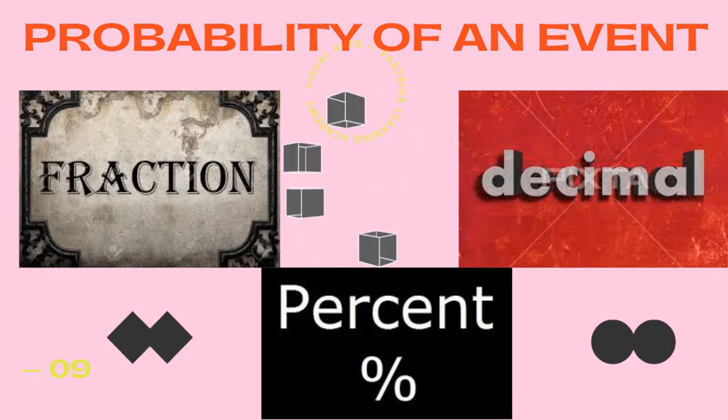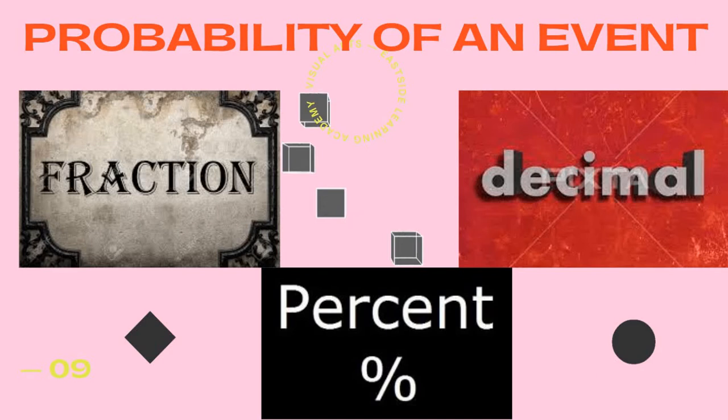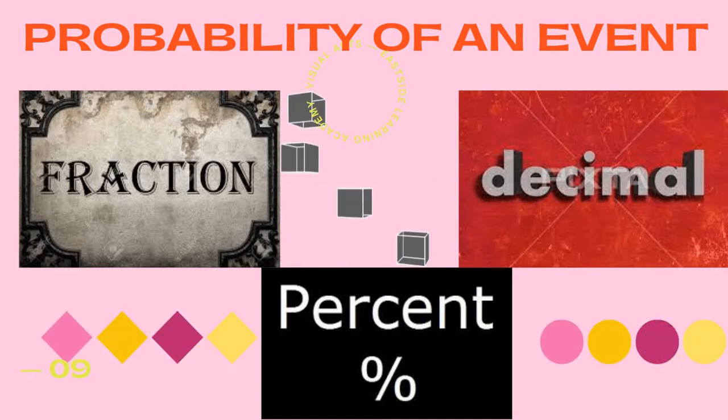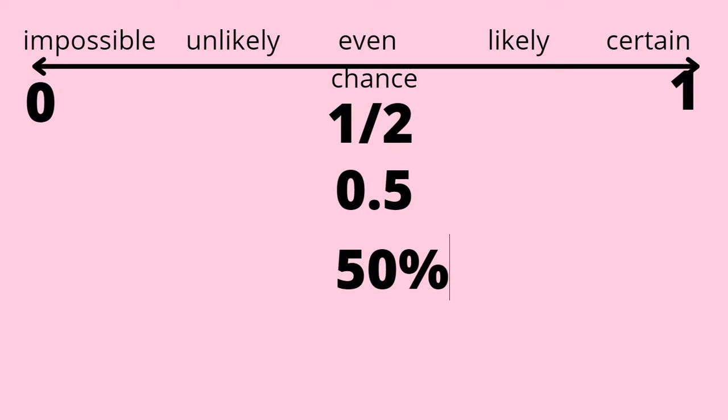The probability of an event can be written in three forms: fraction, decimal, or percentage form. The probability line goes from zero to one. When the event is impossible to happen, its probability is zero. And if an event is definitely going to happen, or it's certain, its probability is one.